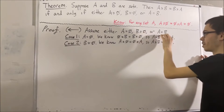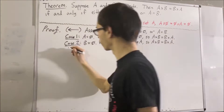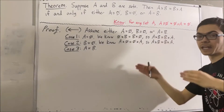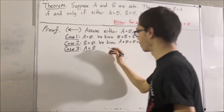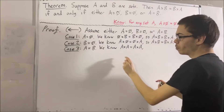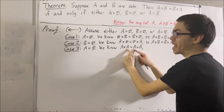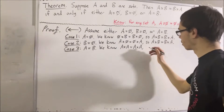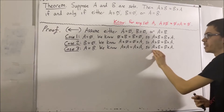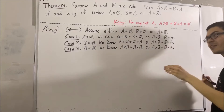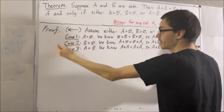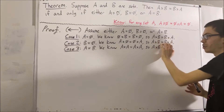We have one last case to consider, and that is if A is equal to B. Now, we know that the set A times A is equal to itself. And, since A is equal to B, we can replace the second and third A's with B. And again, we have successfully deduced that A times B is equal to B times A. We've gone through all three possibilities.